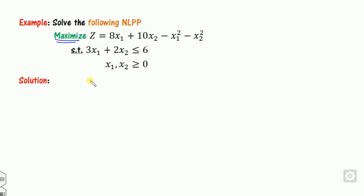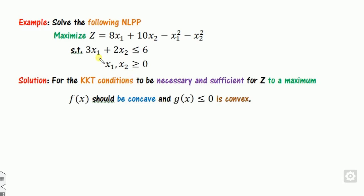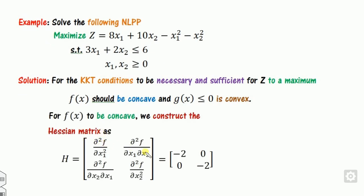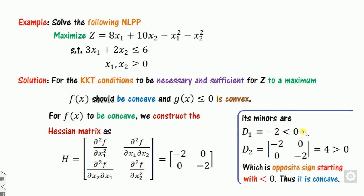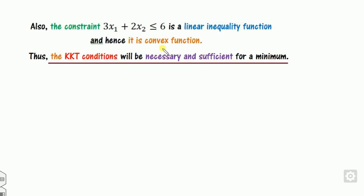Third example: maximization problem with less-than constraints. Since the problem is maximization, we must prove the objective function is concave. Using the Hessian matrix, the eigenvalues are both negative (diagonal values less than zero), confirming the function is concave. Alternatively, principal minor d1 is less than zero and d2 is positive — alternating sign starting from negative — so the function is concave. The constraint is linear, hence convex. Therefore the KKT condition is necessary and sufficient.